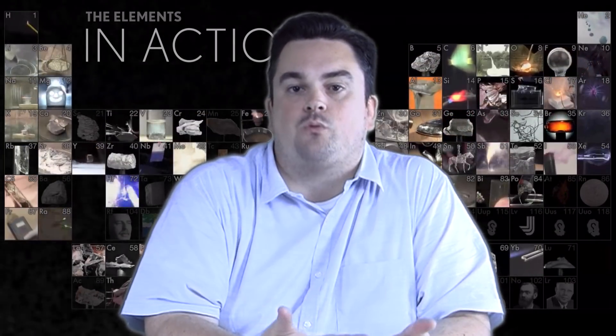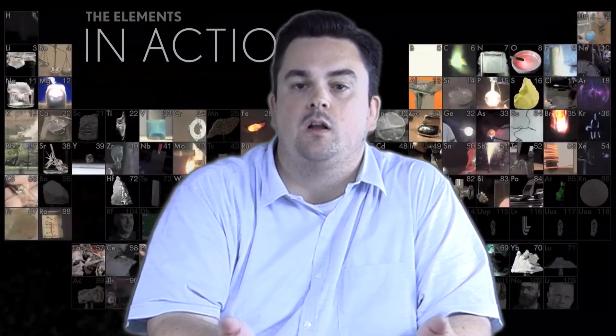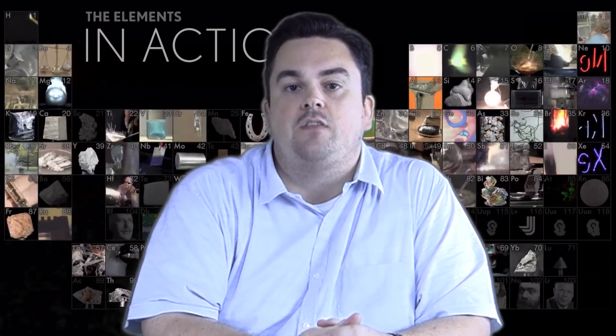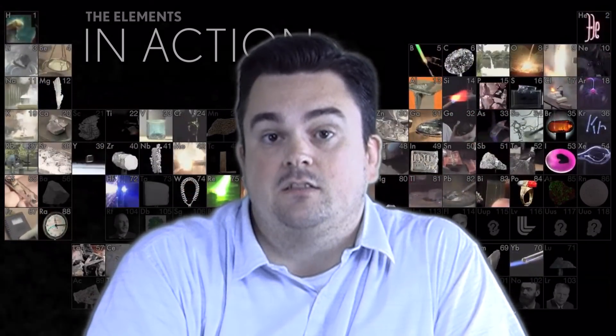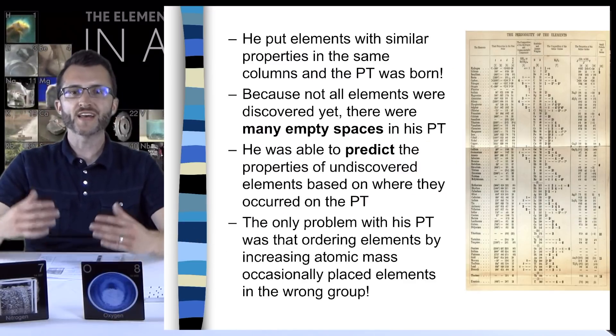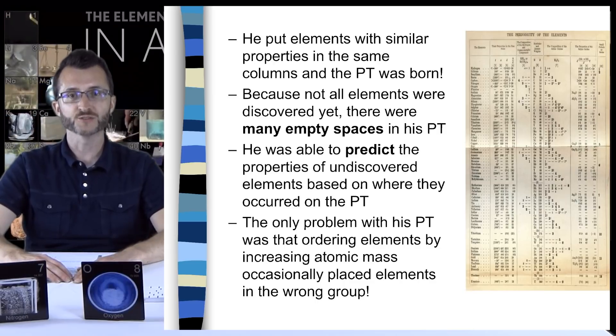Mendeleev really gets the bulk of the credit here for the periodic table because he was bold enough to make predictions about elements that he never saw, never touched, and were not yet discovered. As a matter of fact, when gallium eventually was discovered, its density was measured and published. Mendeleev read that publication and told that scientist that he was wrong. Mendeleev never touched, saw, or measured the mass or volume of gallium before, but he was so certain in his prediction that he told the other scientist his density wasn't correct. And as a matter of fact, Mendeleev was correct. The only problem with this periodic table was that ordering elements by increasing atomic mass occasionally placed elements in the wrong group.